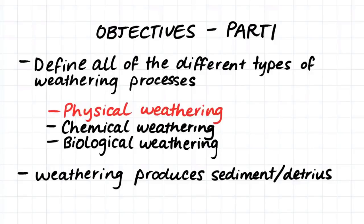So firstly, just to define weathering. Weathering is a process which breaks up solid rock and eventually transforms it into sediment or chunks of rock called clasts or detritus. Rock that hasn't undergone weathering is called fresh rock. Weathering includes physical weathering, chemical weathering, or biological weathering.